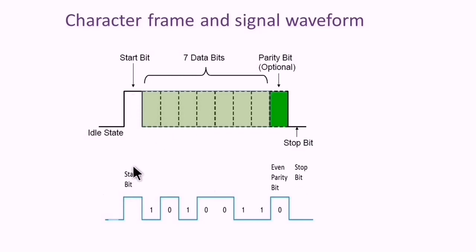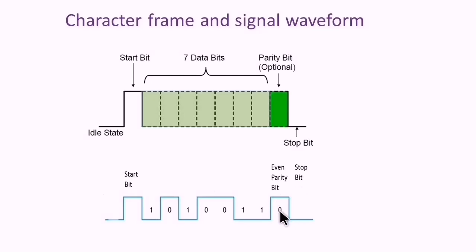The start bit indicates the beginning of the frame. Then seven bits of data are transmitted, followed by a parity bit, which is used for error detection — this can be odd parity, even parity, or no parity. In the example shown, even parity is selected, so the transmitter makes the parity bit zero to get an even number of ones in the frame.